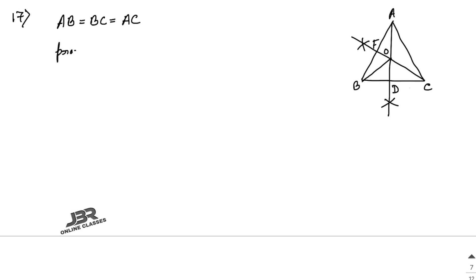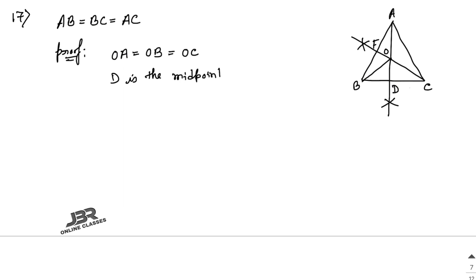For the proof: O lies on the perpendicular bisector of AB and BC, which means OA is equal to OB is equal to OC — as O is the circumcenter of triangle ABC.